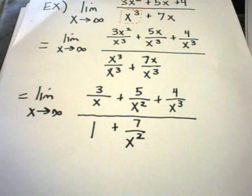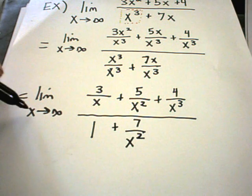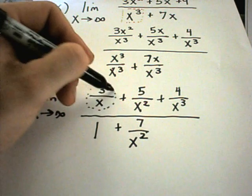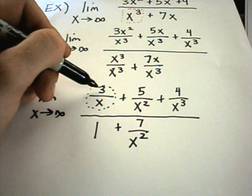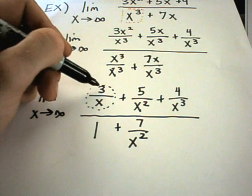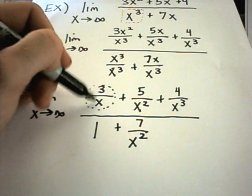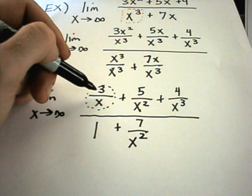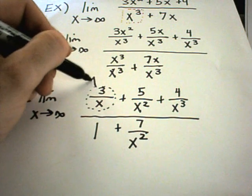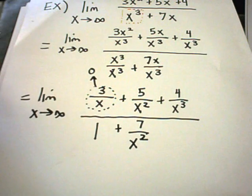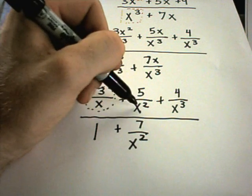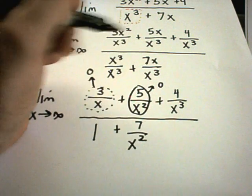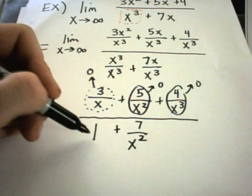At this point we've done our simplification. As x gets bigger and bigger, let's think about 3 over x — 3 over 10, 3 over 100, 3 over 1,000, 3 over 1,000,000. If you put those into a calculator, you'll see they're all getting closer and closer to 0. So as x goes to infinity, that piece goes to 0. Same thing — 5 over a number that's getting bigger, squared, goes to 0 also. 4 over x cubed also becomes 0. 1 stays 1.